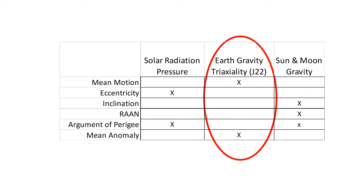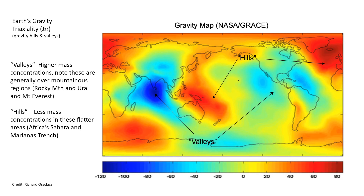Earth's gravity has really strange effects on a geobird. The Earth's gravity field — illustrated in a chart from Richard — introduces the concept of valleys and hills. Valleys are high-mass concentrations, over the Rocky Mountains and the Urals, where gravity is stronger due to mass concentration. Hills are areas of less mass concentration, where gravity is weaker.